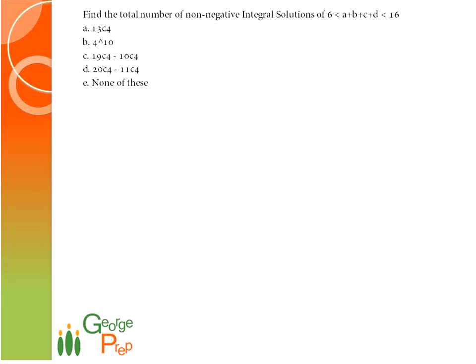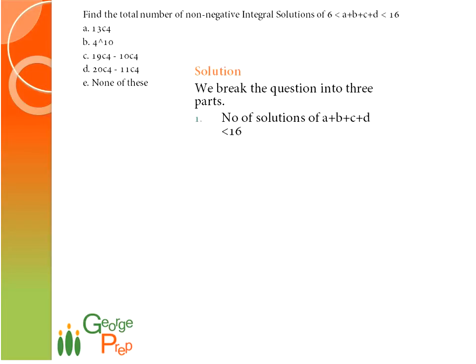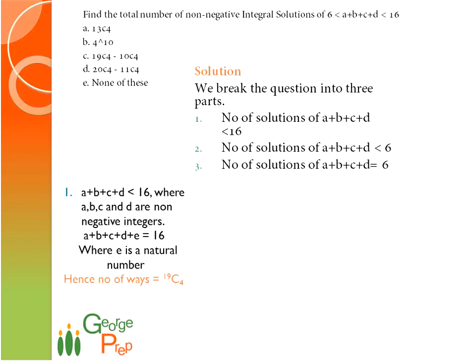Let us get back to our main question: find the total number of non-negative integral solutions where A plus B plus C plus D lies between 6 and 16. We break this into three parts: number of solutions of A plus B plus C plus D less than or equal to 16, which gives 19C4; number of solutions less than 6, which gives 9C4; and number of solutions equal to 6, which gives 9C3. So the answer is 19C4 minus 9C4 minus 9C3.